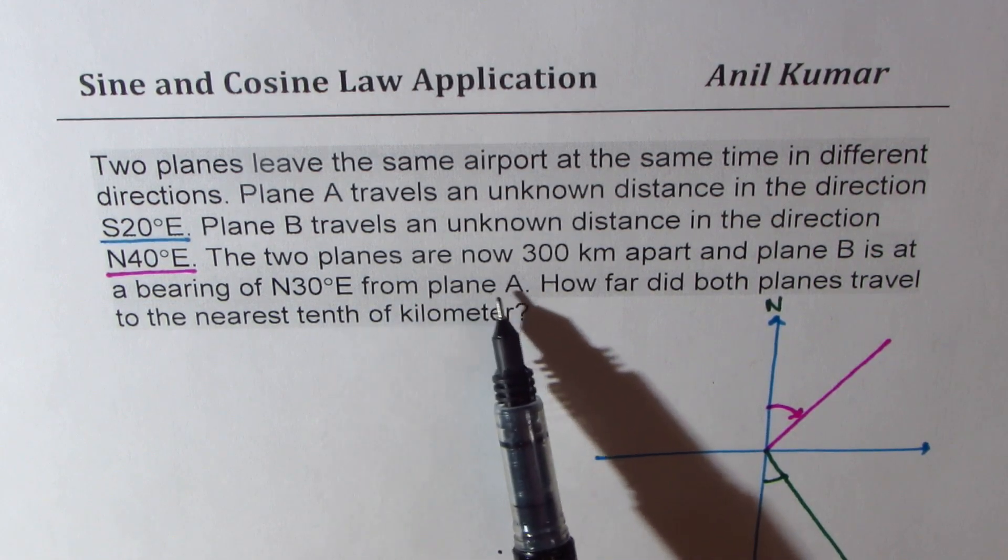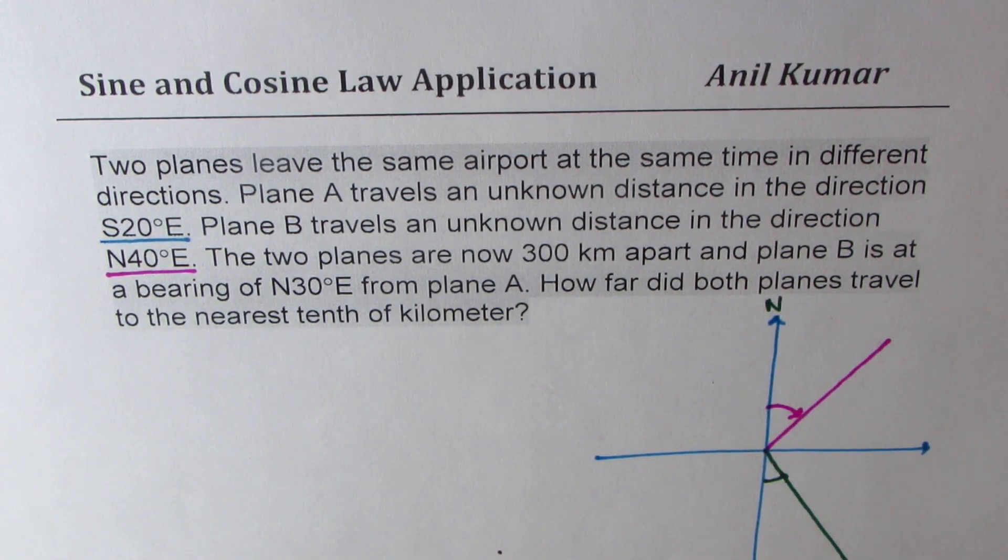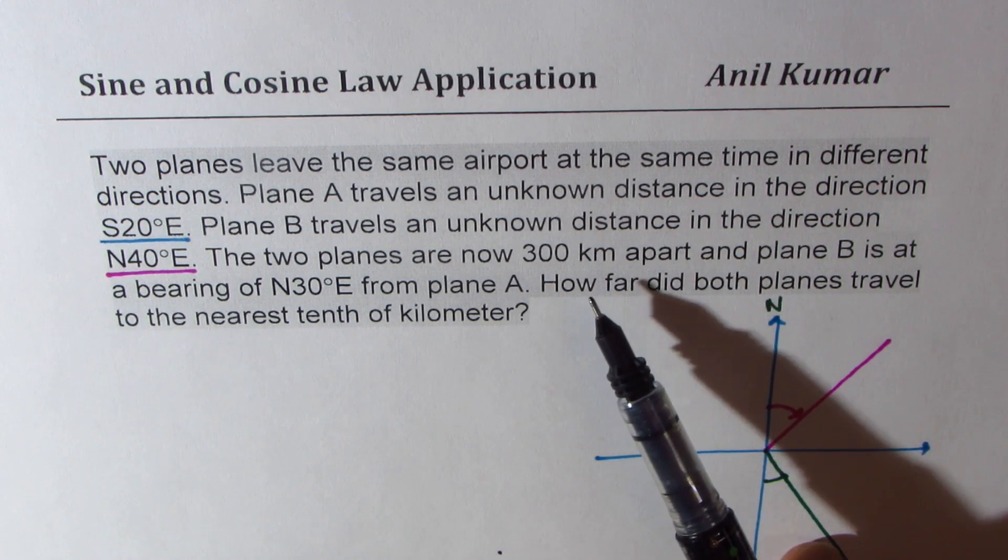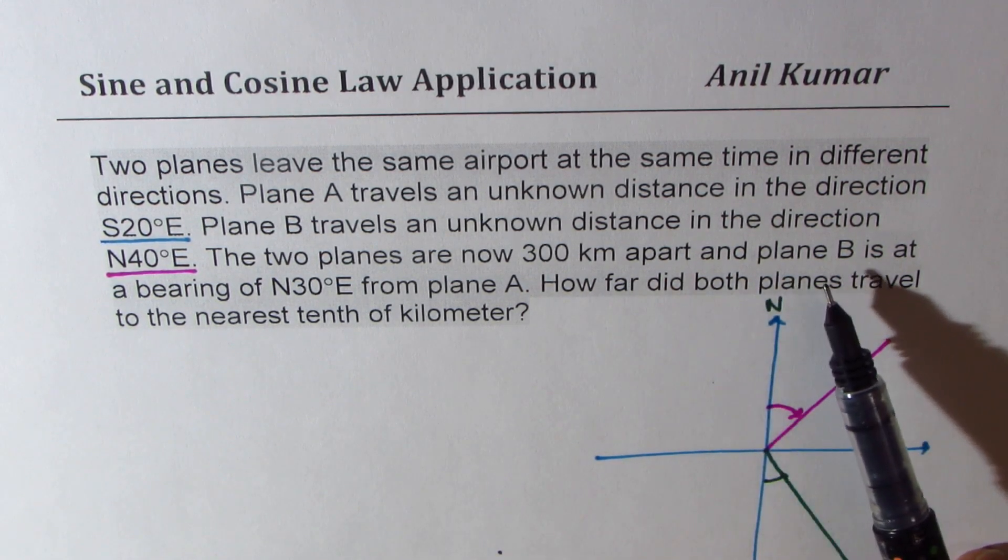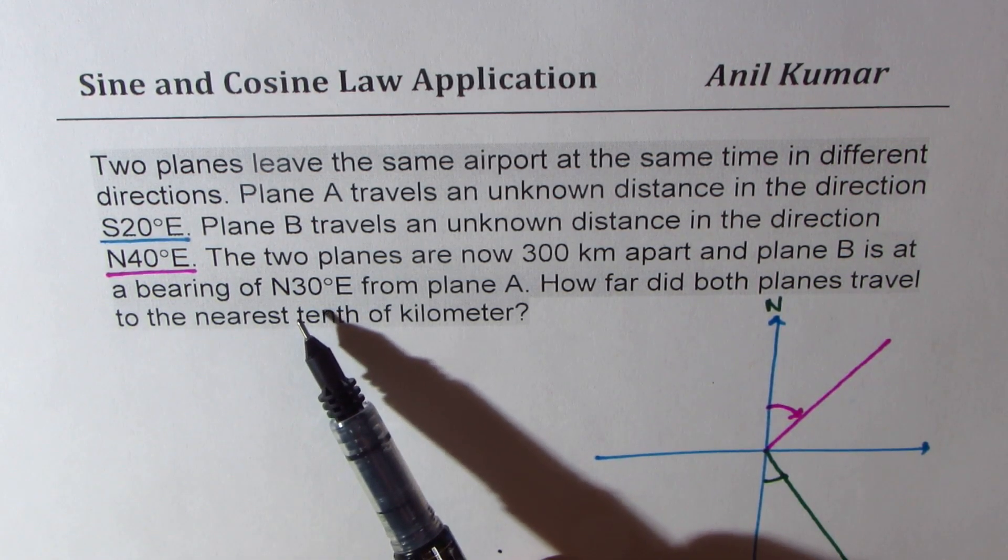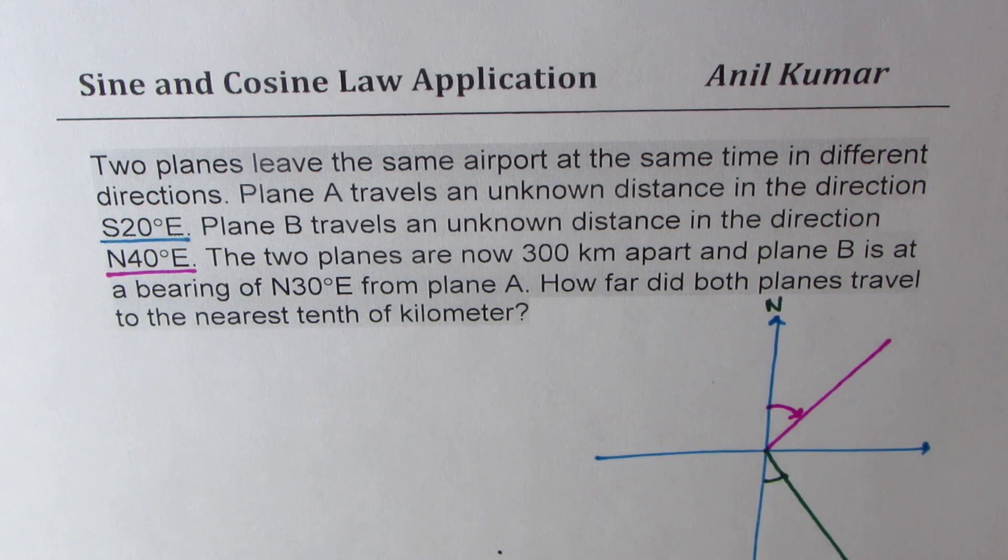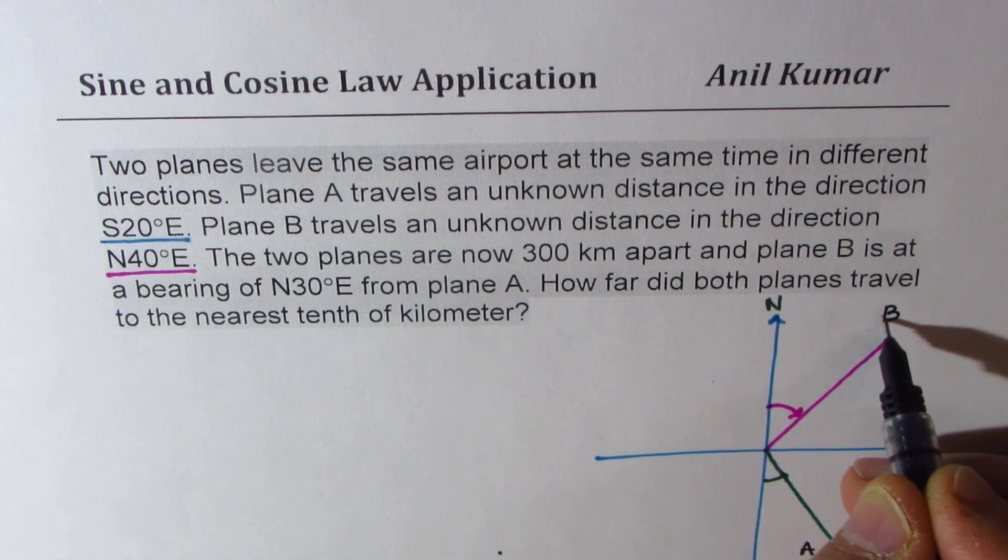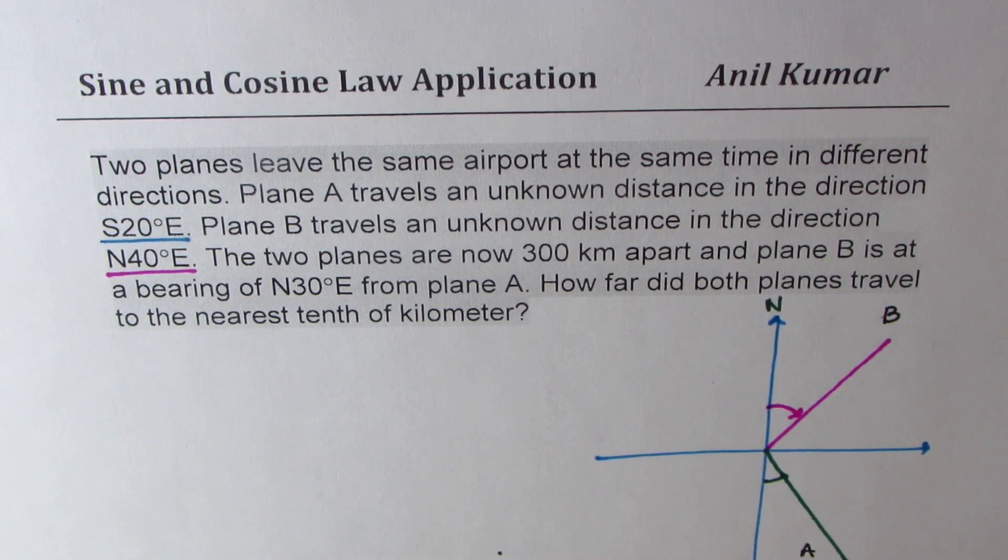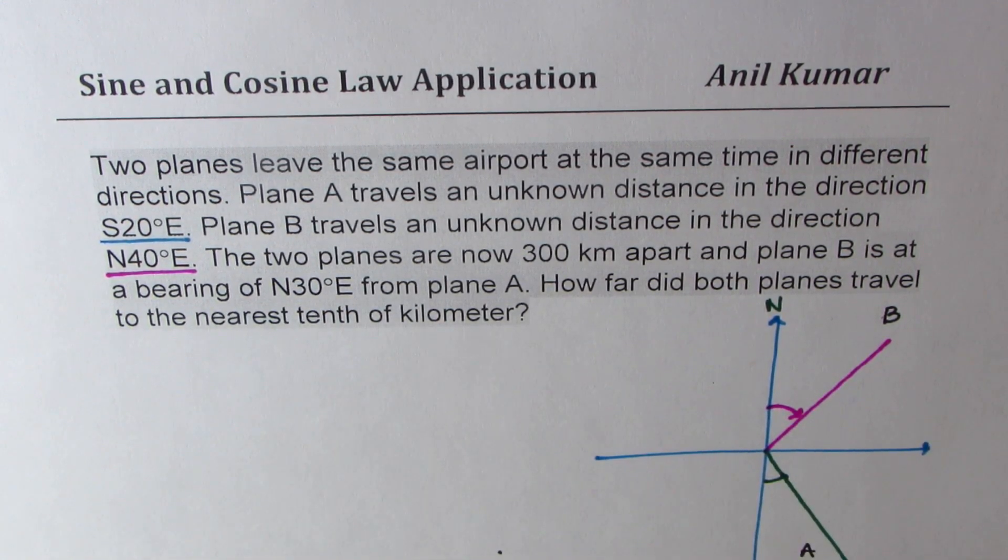The two planes are now 300 kilometers apart. So the distance between these places is 300 kilometers. And plane B is at a bearing of north 30 degrees east from plane A. So from plane A, let's say A is somewhere here, B is somewhere there. From A, it is at a bearing of north 30 degrees east.